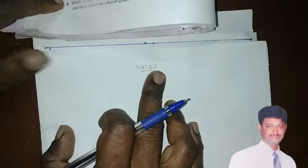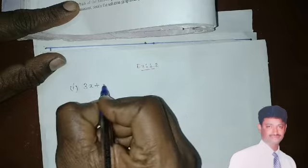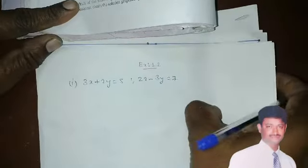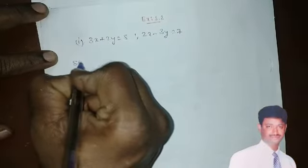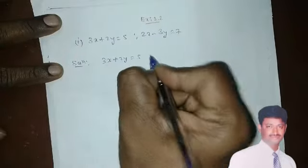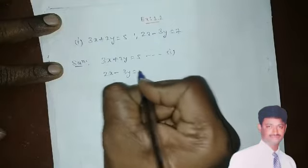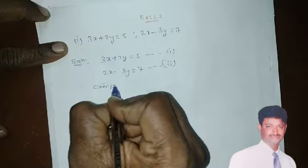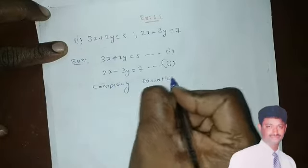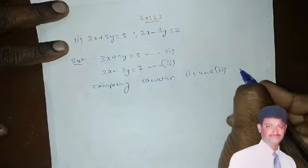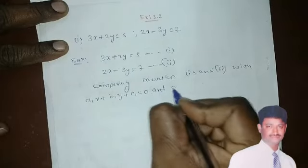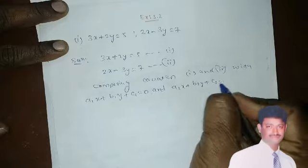Let's see how to solve the third main problem. The first question in exercise 3.2 is: 3x plus 2y is equal to 5, and 2x minus 3y is equal to 7. I will write the solution directly. Take equation 1 as 3x plus 2y equals 5, and equation 2 as 2x minus 3y equals 7. Comparing equations 1 and 2 with a1x plus b1y plus c1 equals 0 and a2x plus b2y plus c2 equals 0.